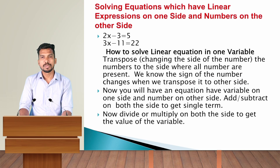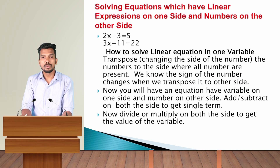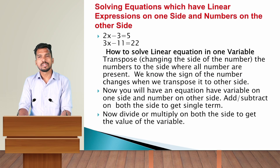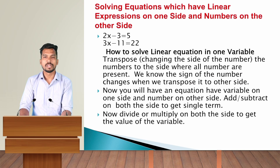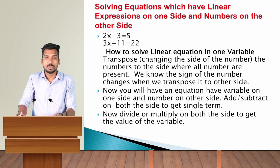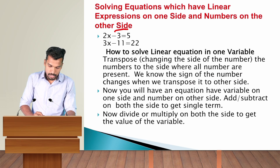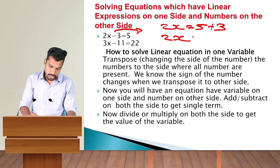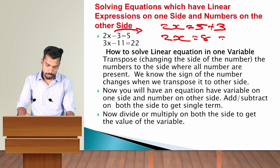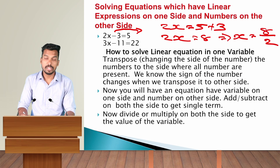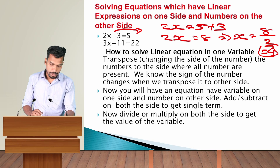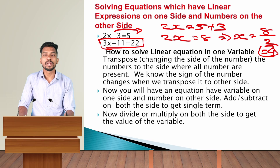Now we solve equations with linear expressions on one side and numbers on the other side. For example, 2x minus 3 equals 5. We transpose the number to the side where all numbers are present — the sign changes when we transfer to the other side. So minus 3 moves to the right hand side: 2x equals 5 plus 3, giving 2x equals 8. Since 2 is multiplied with x, dividing both sides by 2 gives x equals 4.